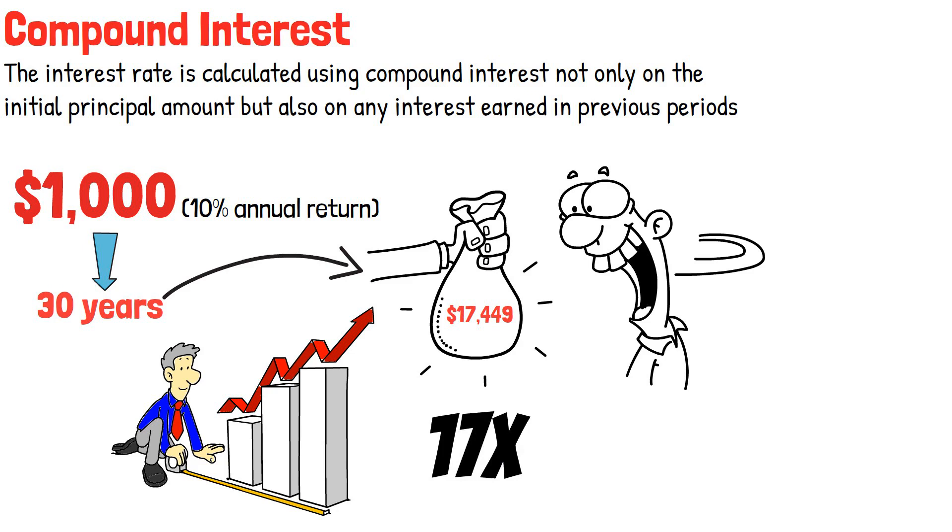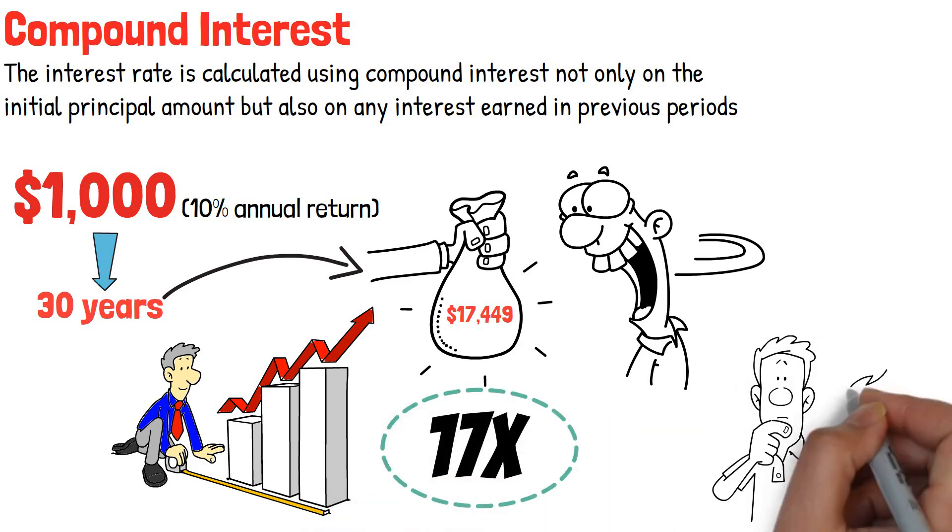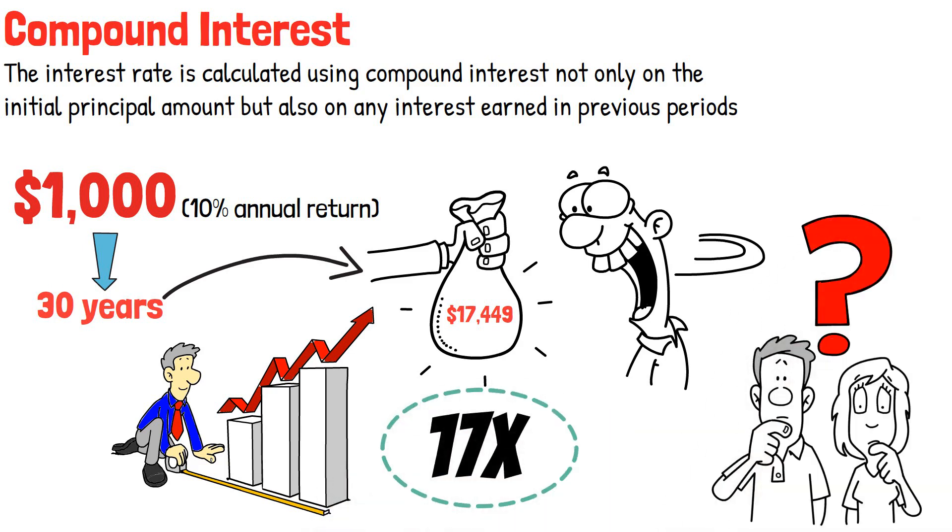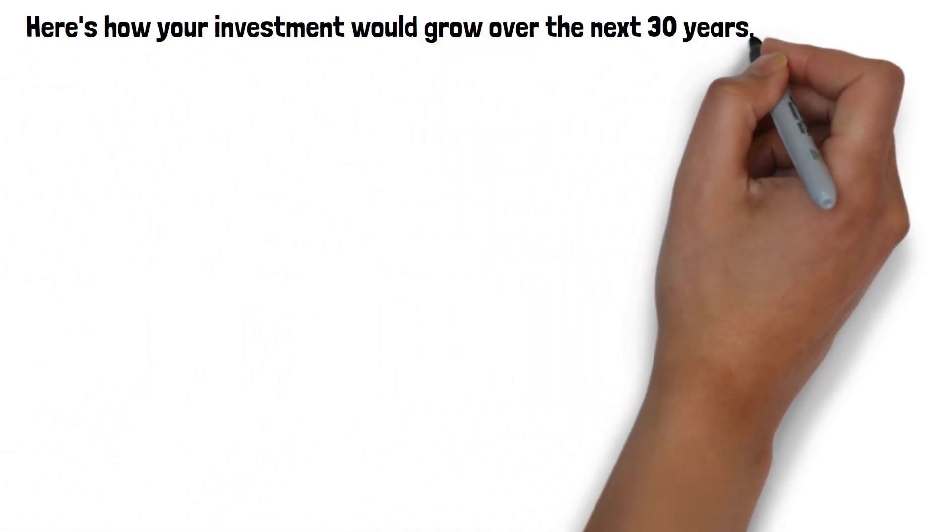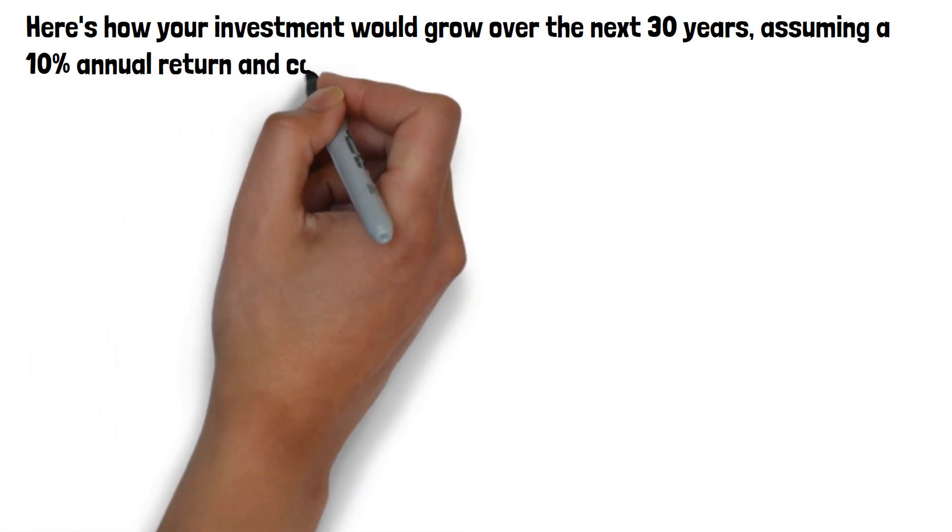How is that so? Here's how your investment would grow over the next 30 years, assuming a 10% annual return and compounding every year.